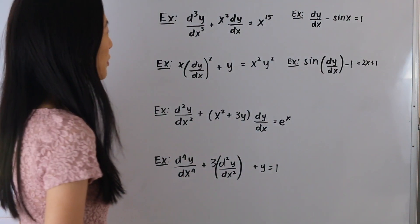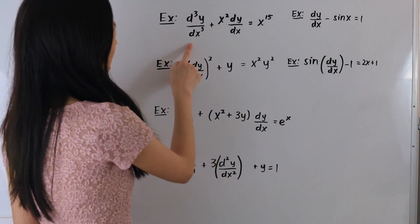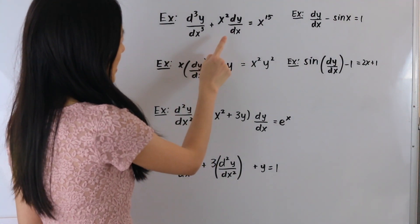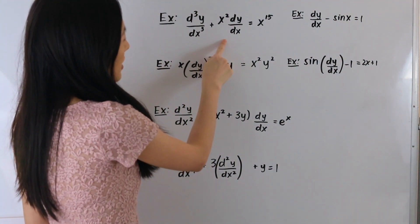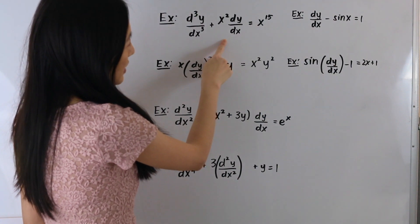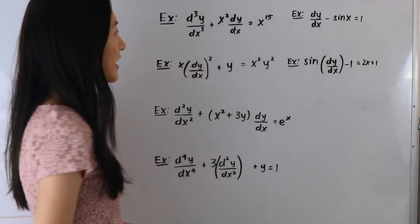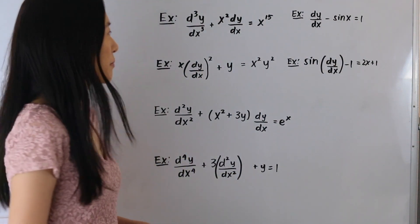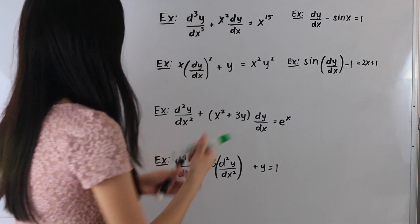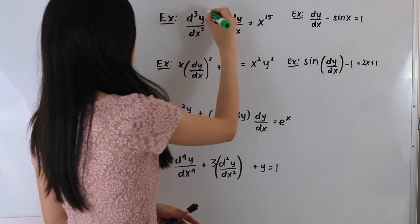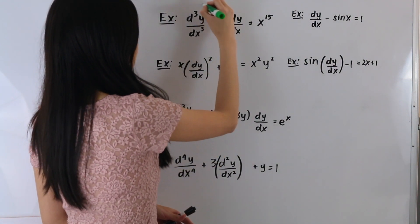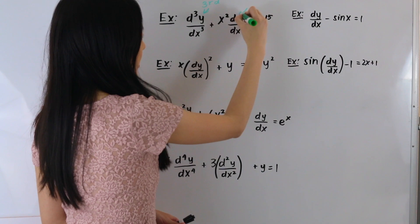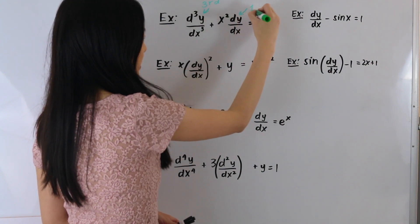In this first example, we have d cubed y over dx cubed plus x squared times dy over dx, equal to x to the 15th. Let's start by labeling our derivatives. This derivative here is third order, and this derivative here is first order.